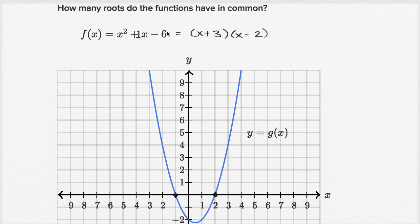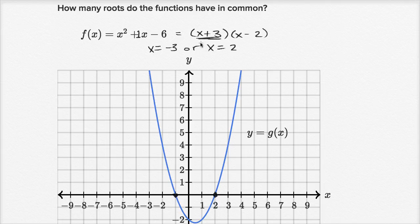So f of x is going to have zeros when x equals negative three, or x equals two. These are the two zeros. If x equals negative three, this expression becomes zero. Zero times anything is zero. If x equals two, this expression becomes zero, and zero times anything is zero. So f of negative three is zero, and f of two is zero. These are the zeros of that function.